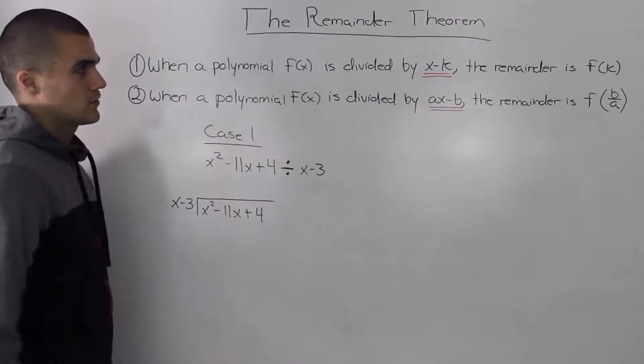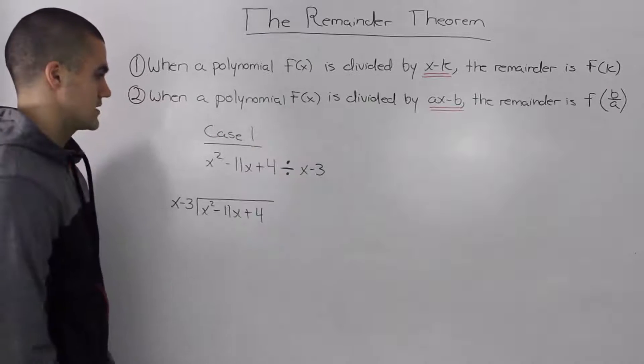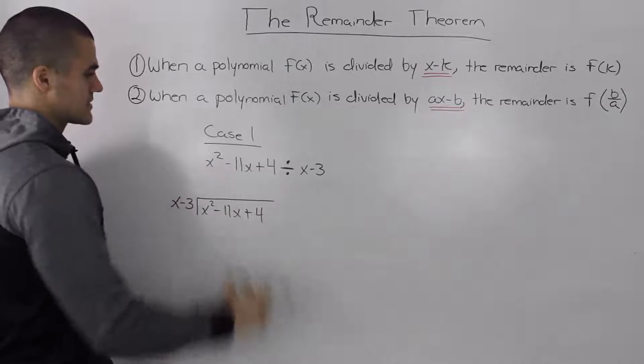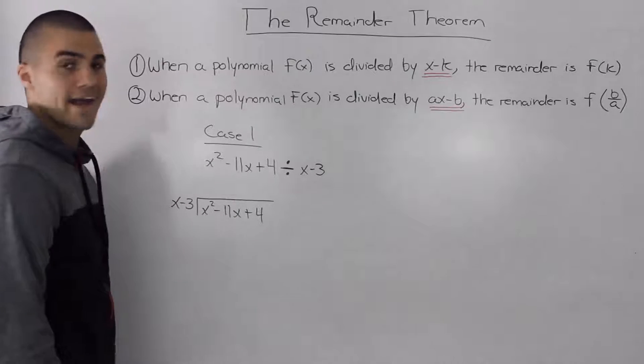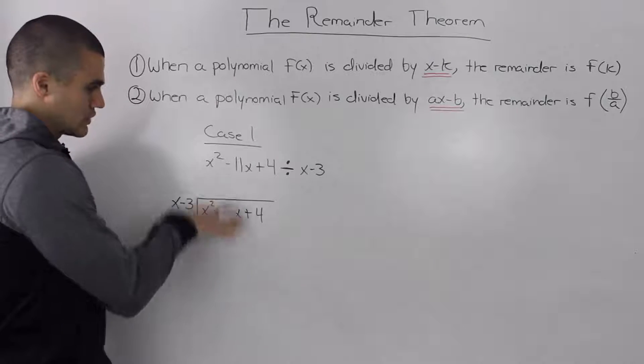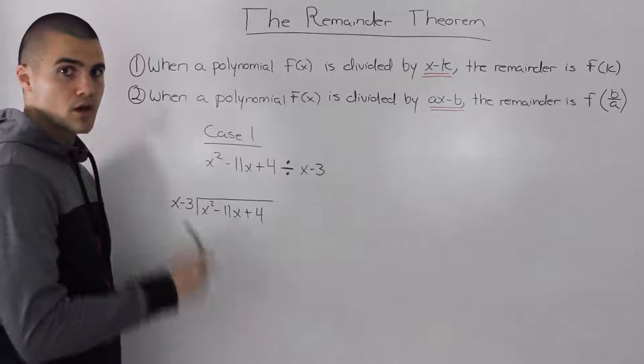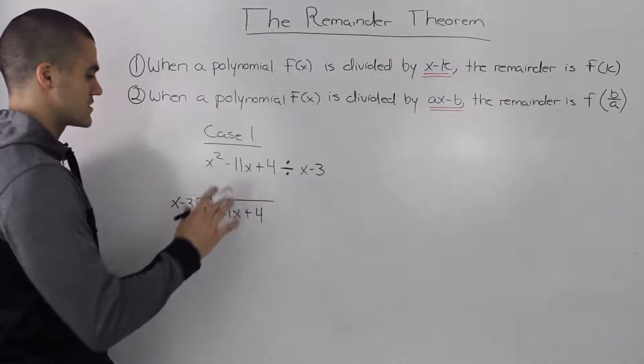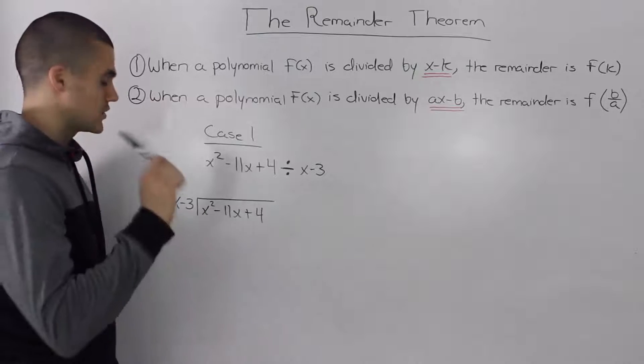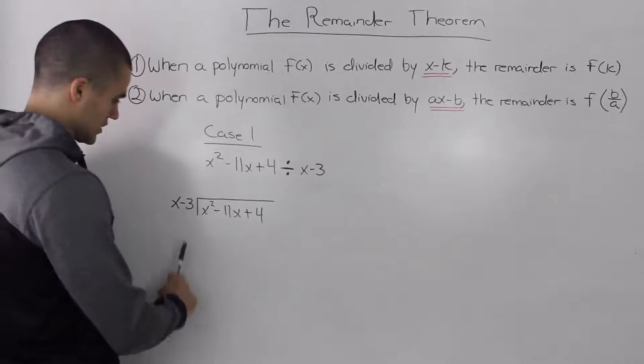The use of the remainder theorem is best shown through examples. So I'm going to go through two different cases. The first case here is x squared minus 11x plus 4 divided by x minus 3. To start off, the first thing I'm going to do is use long division to find the remainder. I'm assuming you already watched the long division videos before this, so I'm not going to go through too much explanation. Let's do the long division on this.